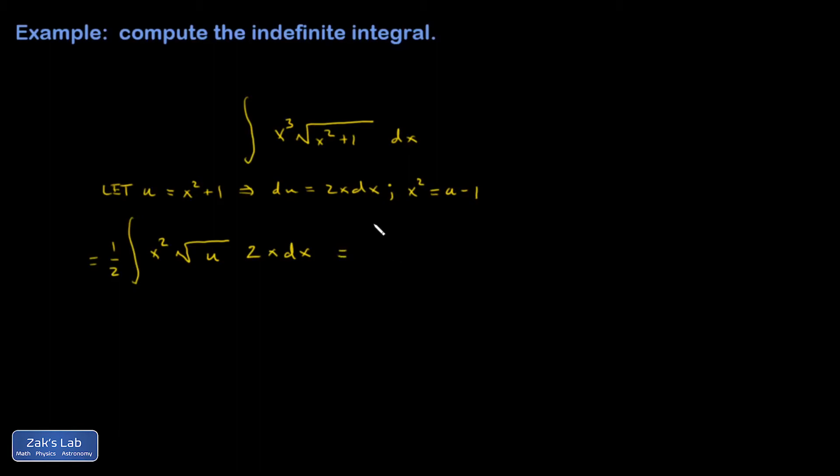I've still got to get this thing fully transformed in terms of u. So I have one half, x squared, which I just found out is just u minus one, and then I have a square root u, and then a 2x dx that's just du.